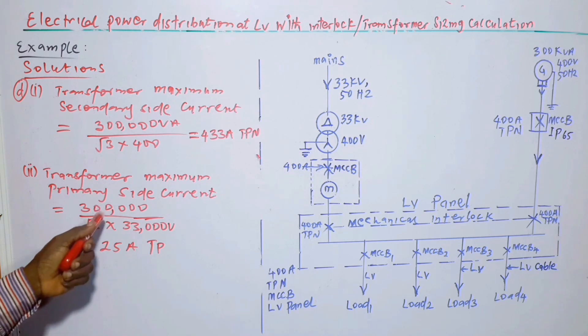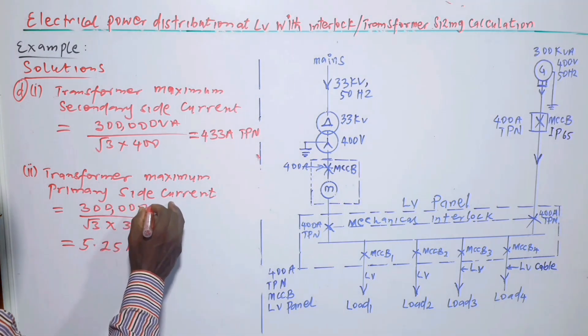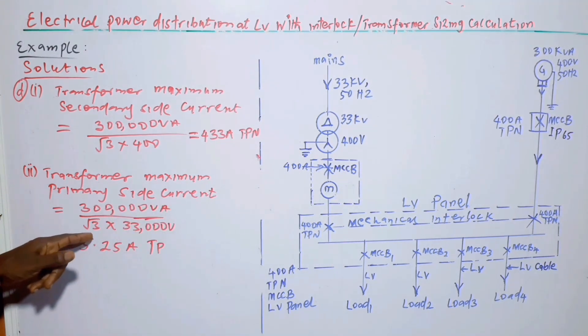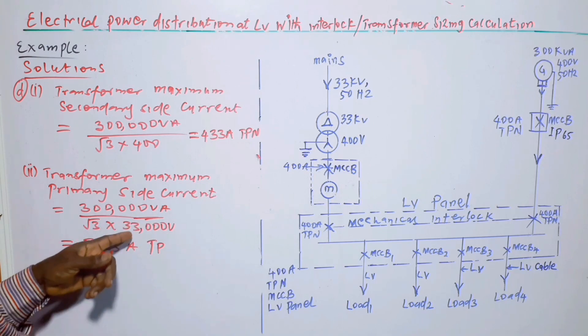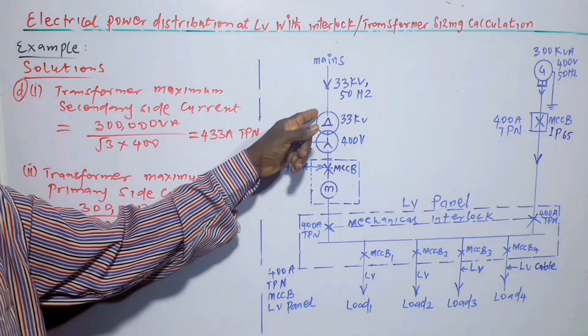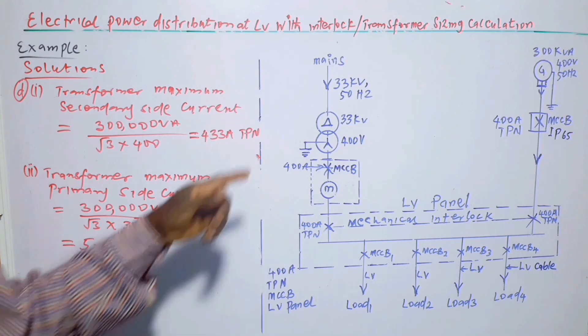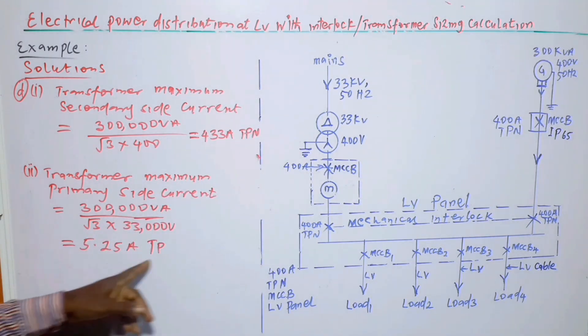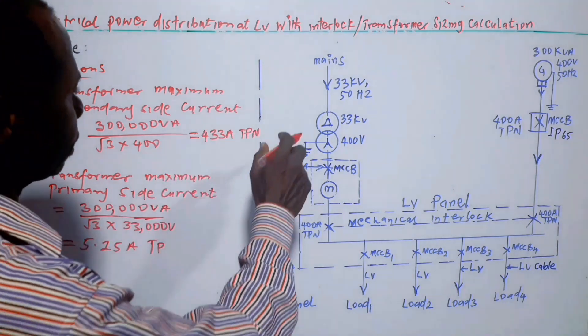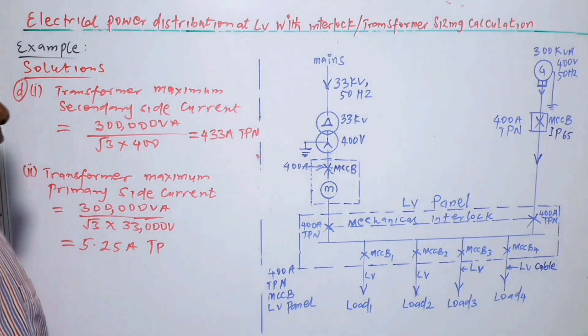So with that in mind, transformer maximum primary side current is equal to 300,000 VA divided by root 3 times 33,000 volts. Since the primary line voltage is 33 kV, the answer is 5.25 A triple phase. Triple phase in the sense that there is no neutral on the primary side because that is the delta side. And that is the end of the last part of the question.